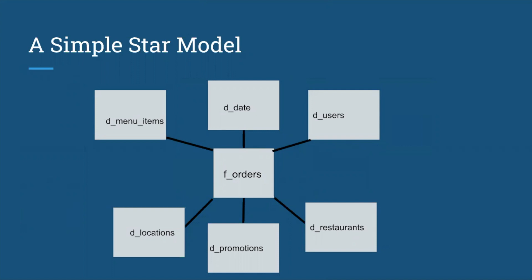Let's start by approaching this with a very simple star model. It's really easy to put orders in the middle — orders is the fact table. Facts are basically transactions; the people ordering food, that's the fact table. You might be tempted to put everything around it. D users represents both drivers and customers generally, because a driver might become a customer and vice versa. Keeping them in one table might make things easier, though it also depends on how complex the driver versus customer information becomes.